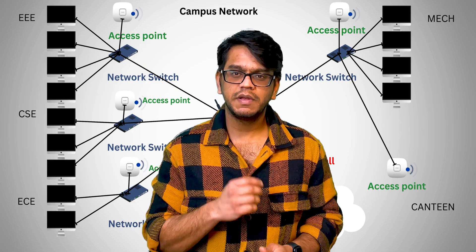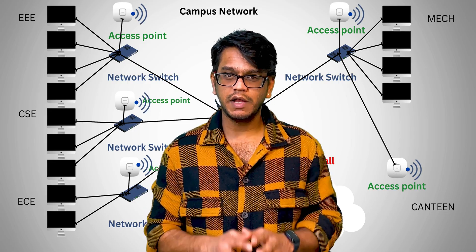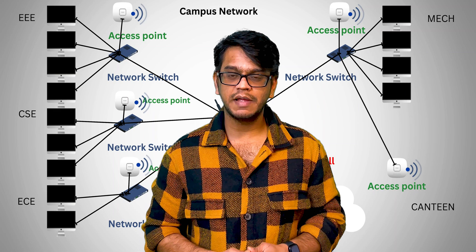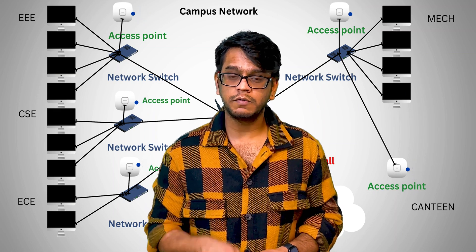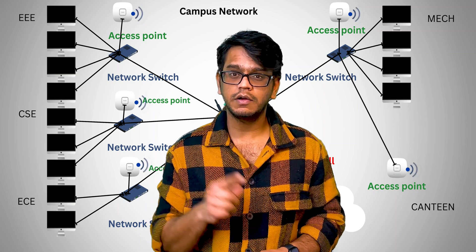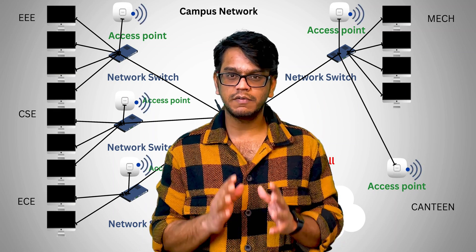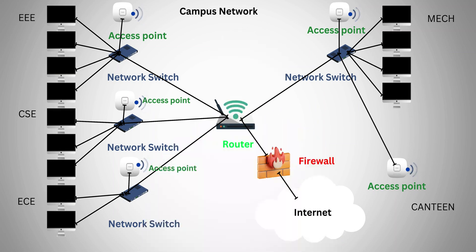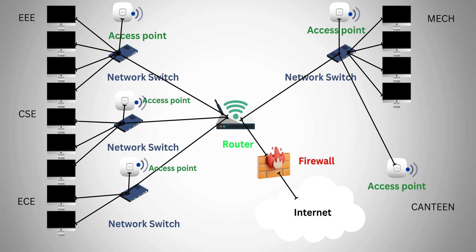In my previous video, I clearly explained how networking devices play an important role in forwarding your data to the internet using a campus network example. Not only in the campus — the same fundamental design is applicable for your office, buildings, hospitals, banks, and airports. If anyone missed that video, I have included a link in the description for you to check out.